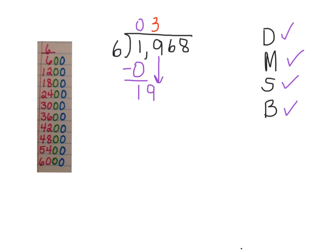I can do 3 times 6, which equals 18. So I divided and multiplied. Now I subtract, and then I bring down the next digit from the dividend.